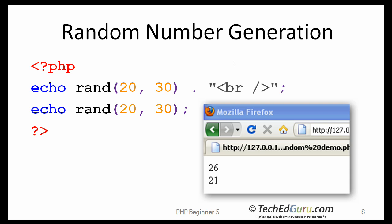Let me introduce you to a function called rand, which will generate random numbers. If you call the function with two arguments, 20 and 30, it will generate random numbers between 20 and 29, but not 30. Every time you call that function, you will get a different random number. If you run the same two lines of code on your computer, most likely the output would be different — it will be two numbers between 20 and 29. That is what the rand function does.